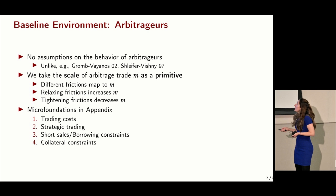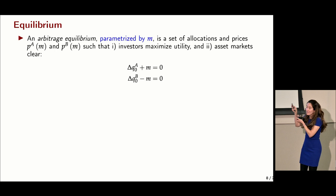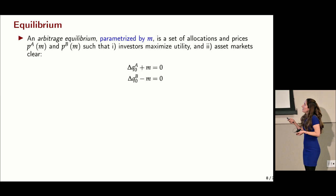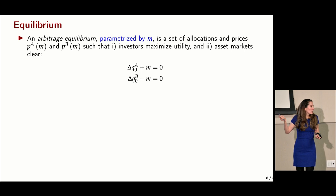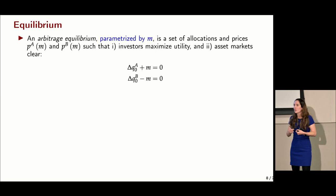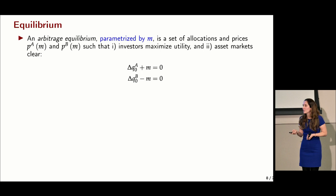We take the amount of arbitrage M as the primitive and characterize an arbitrage equilibrium parameterized by M, a set of allocations and prices depending on M, such that investors maximize utility and markets clear. The market clearing conditions say that whatever the arbitrageur buys in market A equals the change in investors A's position, and whatever it sells in market B equals the change in investors B's position.